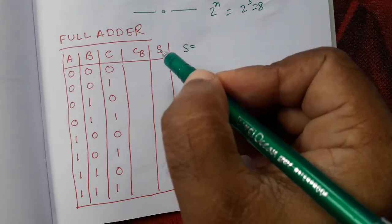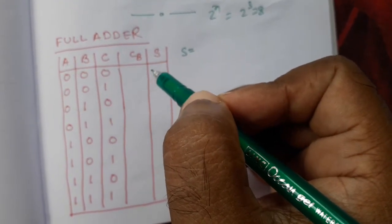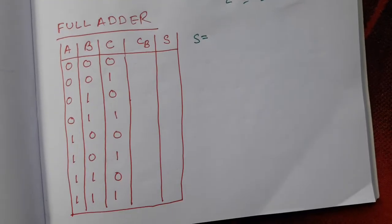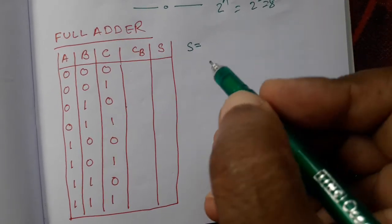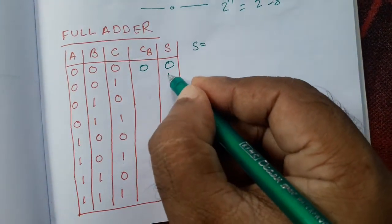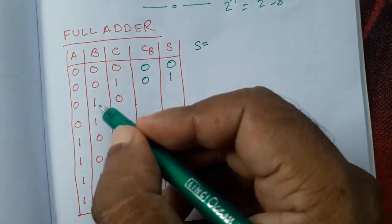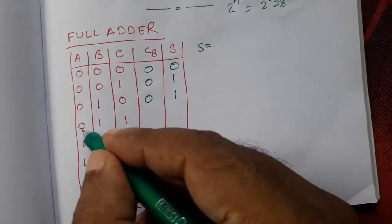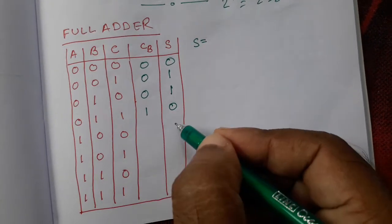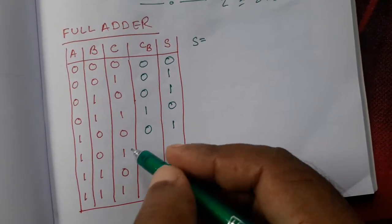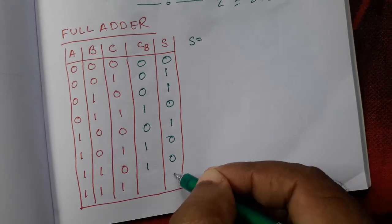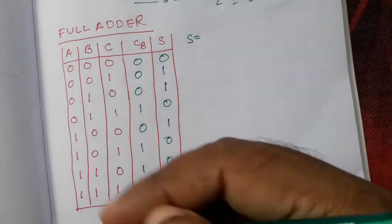CB is the carry bit and S is the sum bit. We will add the values. For 000 sum is 0, carry is 0. For 001 only one bit is there, sum is 1, carry is 0. For 010 sum is 1, carry is 0. For 011 two ones are there, so 1 plus 1 is 0 and carry bit is 1. For 100 sum is 1, carry is 0. For 101 and 110, two bits: 1 plus 1 is 0, carry is 1. For 111: 1 plus 1 is 0 plus 1 is 1 and carry is 1 — that is our full adder.